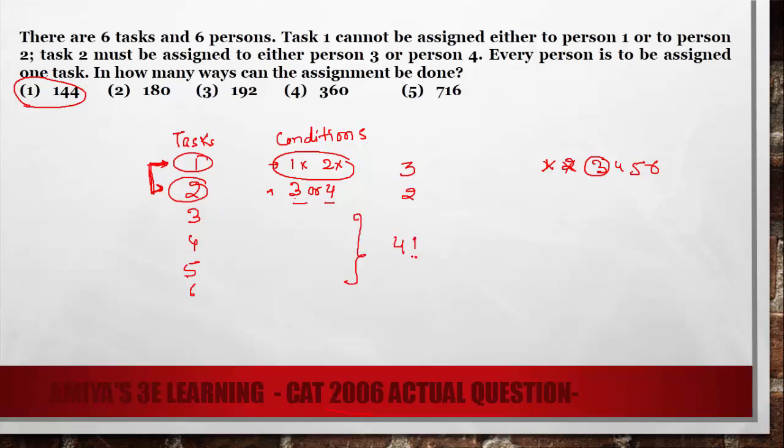So the task could be assigned in 4 factorial ways. Because they are conditionless. So the total ways to assign the task under these conditions is nothing but 3 into 2 into 4 factorial. That is nothing but 144. And this is our answer.